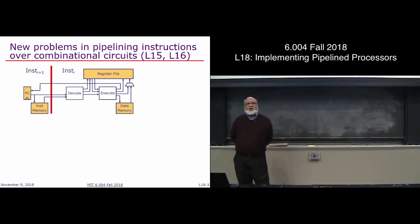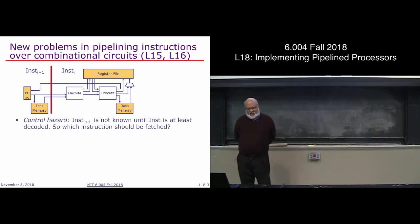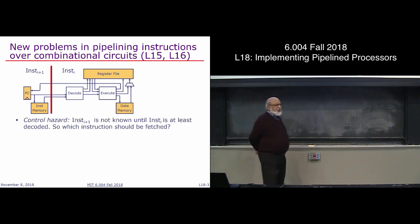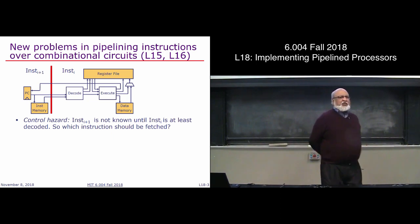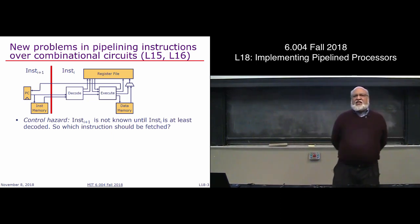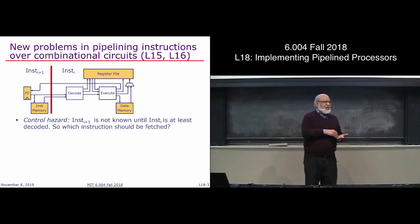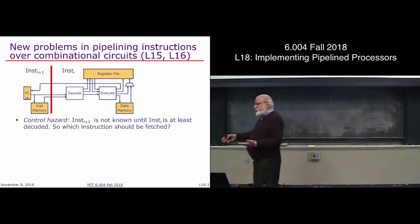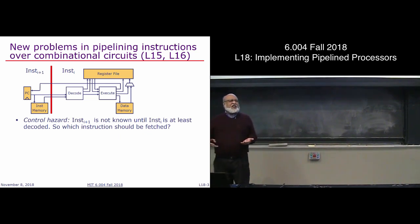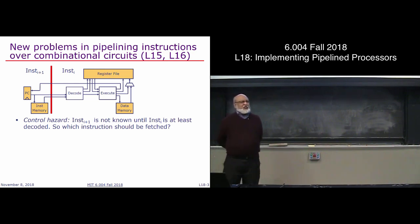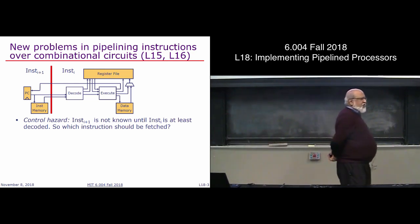The new problems from pipelining: first is the control hazard, and this is the most fundamental one, because you can't even get started. If you're going to have two instructions, how do I know what is the next instruction unless I finish executing the first one? Because if it's a branch instruction, execution has to finish — only then I know which way the branch went. In general, you have to wait for execution to complete before you know for sure what the next instruction is.